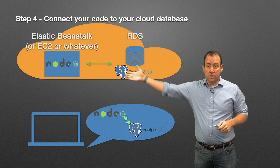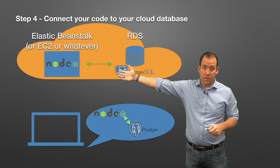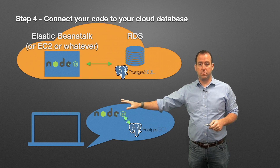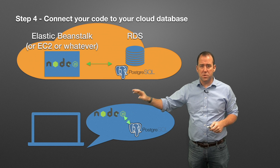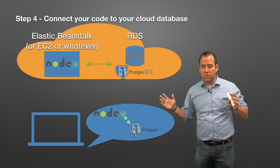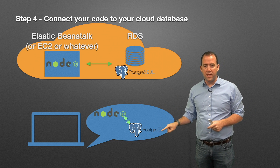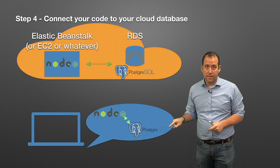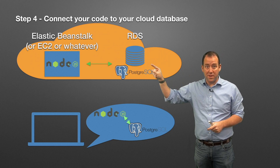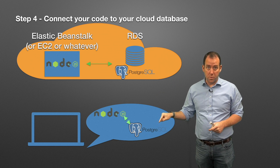There's still a step missing: we've got to write our connection code. When developing locally, you might have code that connects to the database on localhost port 5432 for Postgres, or 3306 for MySQL, with a local username and password. But in the cloud, it's a different username, a different password, possibly a different database name, and it's no longer running on localhost.